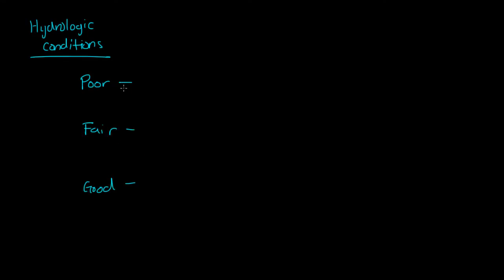Poor means that the ground cover is not too dense, meaning there's less than 50% vegetation cover. Fair is moderate cover, so it's a little bit more cover than the poor condition, but not as much as the good condition.